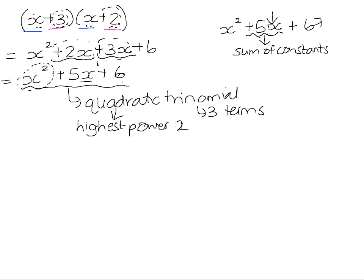If you look at the 6, it's more straightforward because you get the last term of the trinomial directly from the product of the constants. So in a quadratic trinomial, the last term is the product of the constants in the brackets, and the middle term is the sum of the constants in the brackets. We can use that observation to help us factorize a quadratic trinomial.